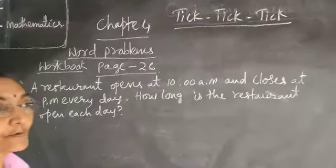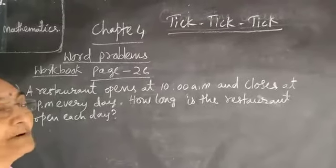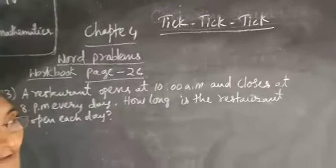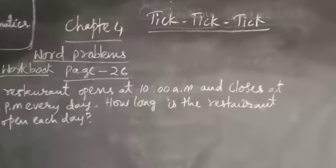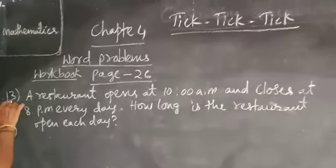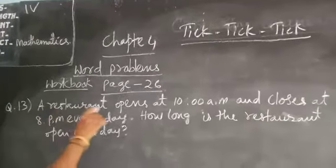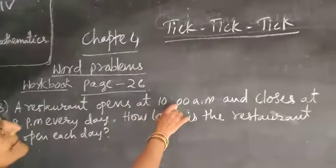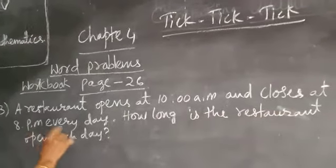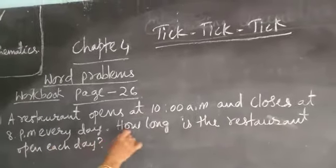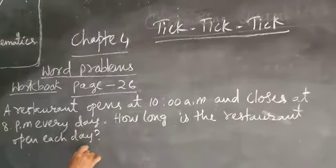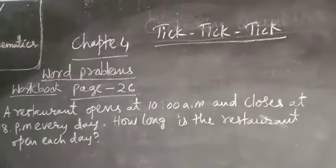Open your workbook page number 26. Here some word problems are there. See question number 13: A restaurant opens at 10 am and closes at 8 pm everyday. How long is the restaurant open each day? This is the question.